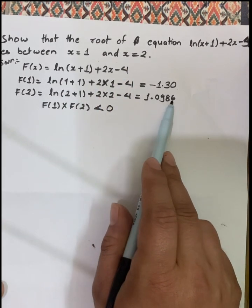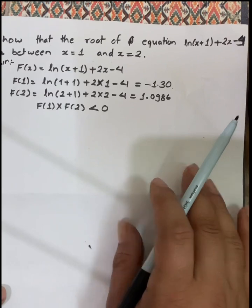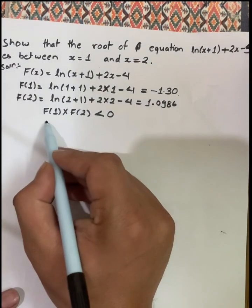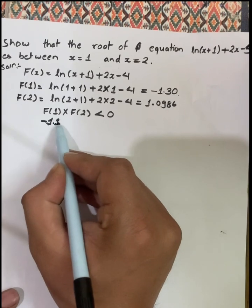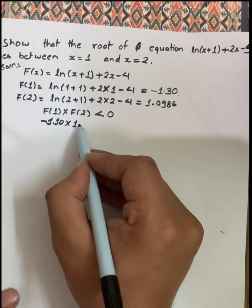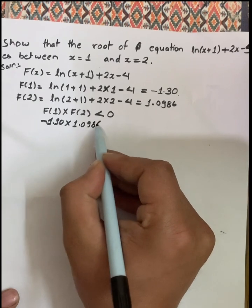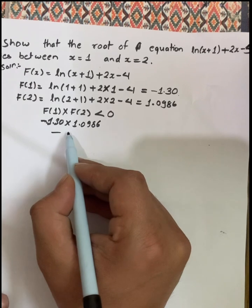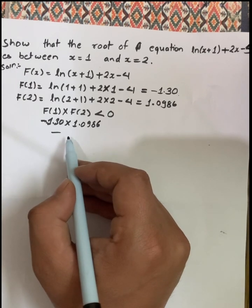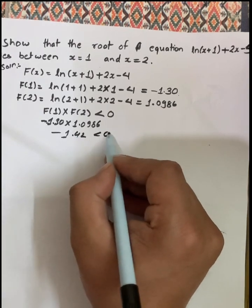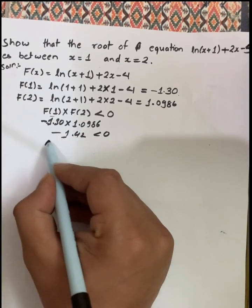f(1) gives approximately -1.30. f(2) gives approximately 1.0986. Multiplying these together gives a negative result — minus something — so the product is less than zero.